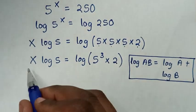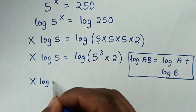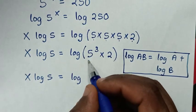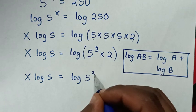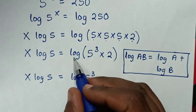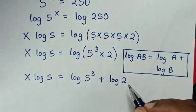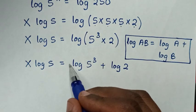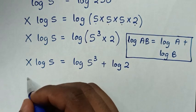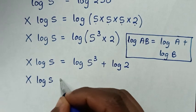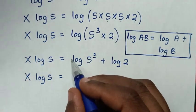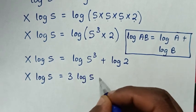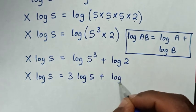So in here, it will be x log of 5 is equal to log of 5 power 3, then plus log of 2. This power 3, when it moves to the base, it will be 3 log of 5 plus log of 2.